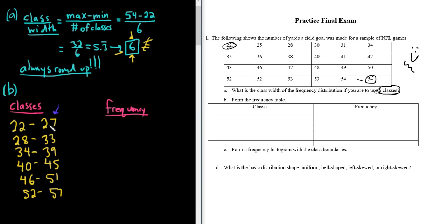Counting: 22 to 27 gives 2; 28 to 33 gives 3; 34 to 39 gives 4; 40 to 45 gives 4; 46 to 51 gives 5.